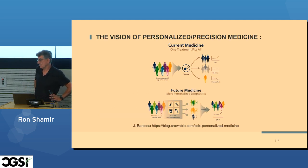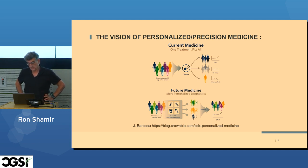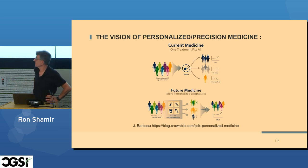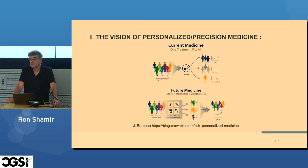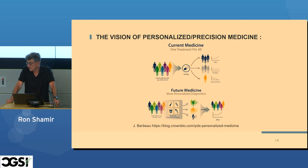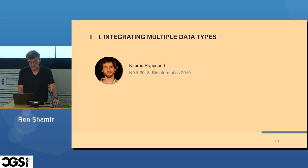The general problem we are talking about is the vision of precision medicine. Rather than treating every patient with the same drug—where as a result some are helped, some are unaffected, and some are hurt—we will use EMRs and OMIC data to tailor different treatments to each subgroup, so that ideally everybody will be positively affected.